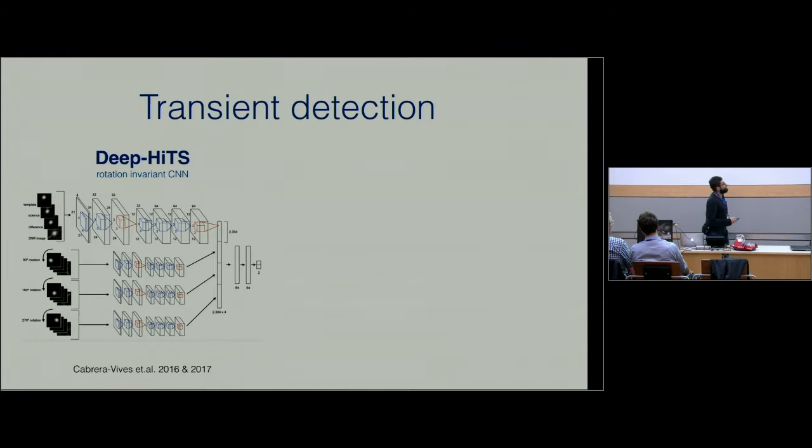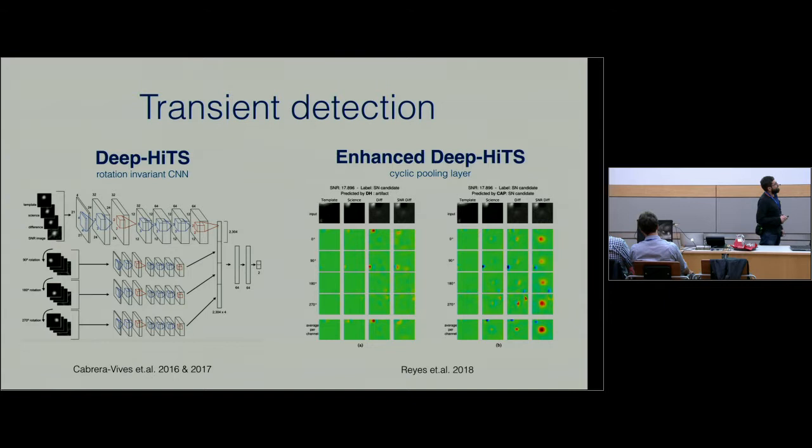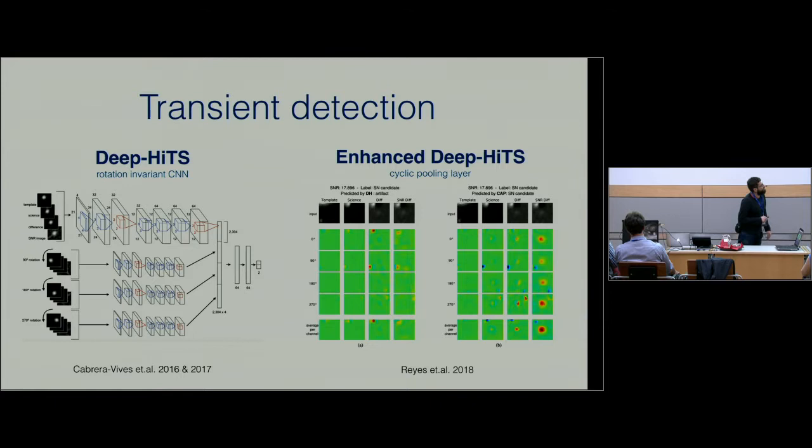This year we published this paper, enhanced deep HiTS. We created a cyclic pooling layer, which is a pooling layer that rotates. We were able to also measure how good the networks were for addressing the rotation invariance of the data. If you're interested in any of this, we can talk about it later.